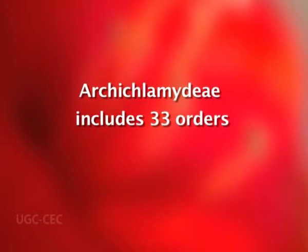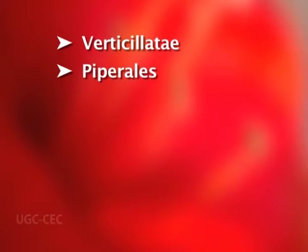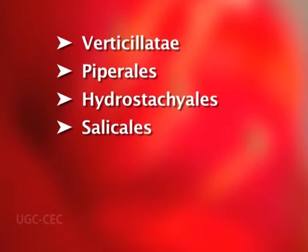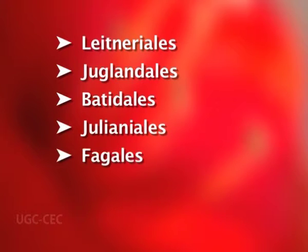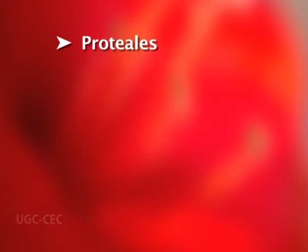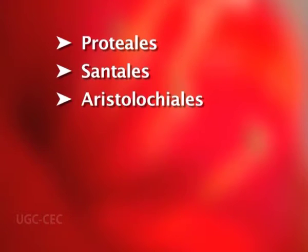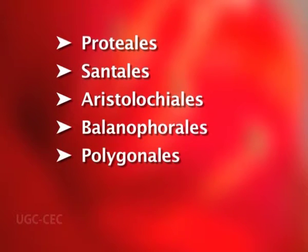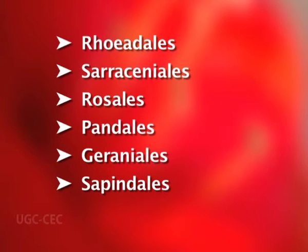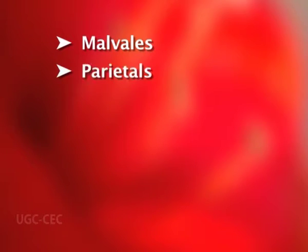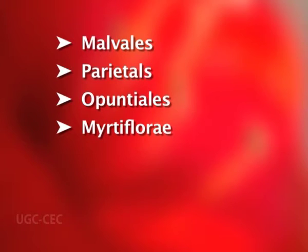In Archichlamydeae, petals are always free. The subclass Archichlamydeae includes 33 orders: Verticillatae, Piperales, Hydrostachyales, Salicales, Garryales, Myricales, Balanopsidales, Leitneriales, Juglandales, Betulales, Julianiales, Fagales, Urticales, Podostemales, Proteales, Santalales, Aristolochiales, Balanophorales, Polygonales, Centrospermae, Magnoliales, Ranales, Sarraceniales, Rosales, Pandales, Geraniales, Sapindales, Rhamnales, Malvales, Parietales, Opuntiales, Myrtiflorae, and Umbelliflorae.